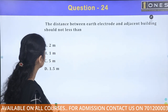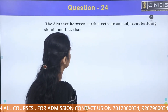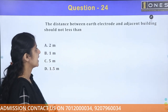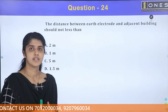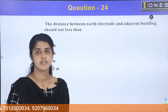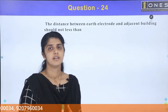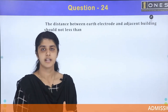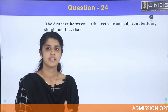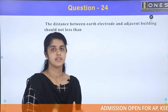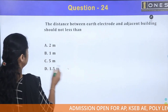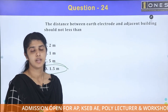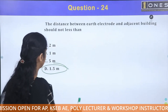The distance between an earth electrode and an adjacent building should not be less than 1.5 meters. We use the electrode and the distance between the building — the minimum is 1.5 meters.